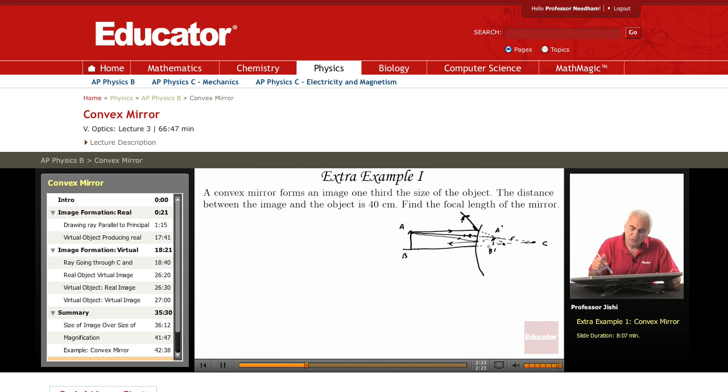Now we are told that A prime, B prime is one third the size of the object. So I know that magnification is one third, M is one over three.